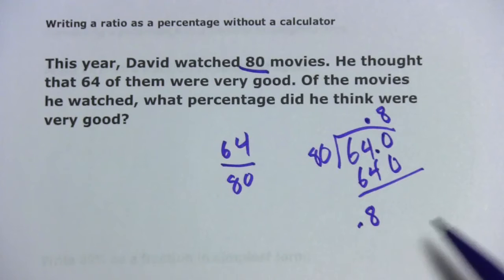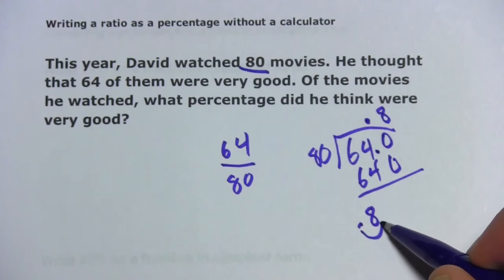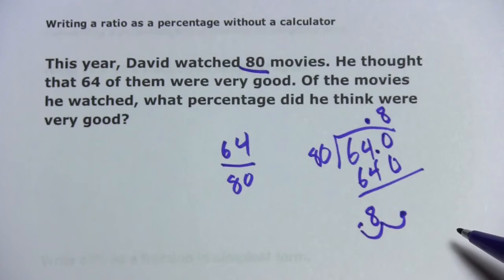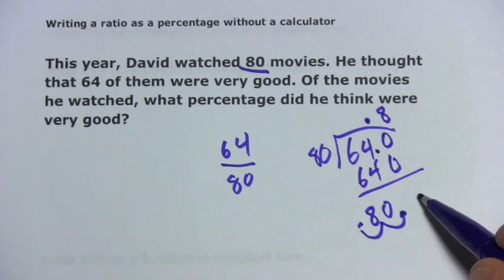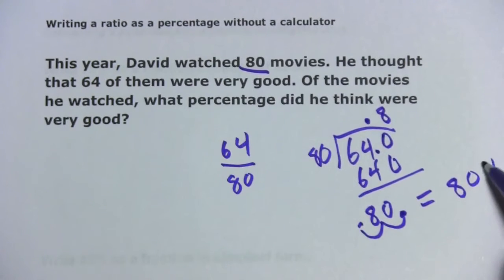Now, to get a percent, I move the decimal point one, two places to the right. And since there's an empty spot here, I fill that in with a zero. So this is 80%.